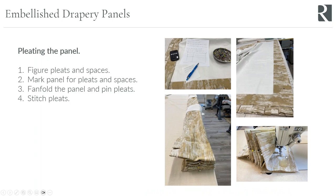Now we're ready to pleat the panel. With the pleats and spaces figured, I spread the panel on my table and pin straight down into my pinnable table for each pleat and space, using those pins to mark them. Then I fan fold the panel, tie it up with fabric remnants, carry it over to the sewing machine, and stitch the back edge of the pleats.